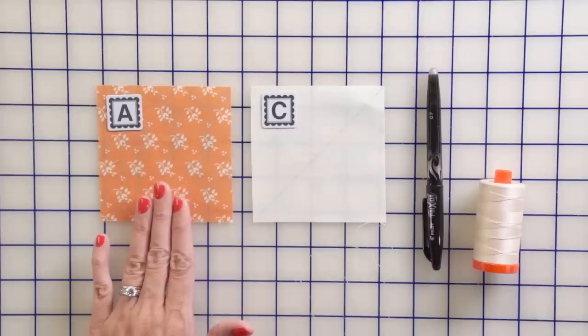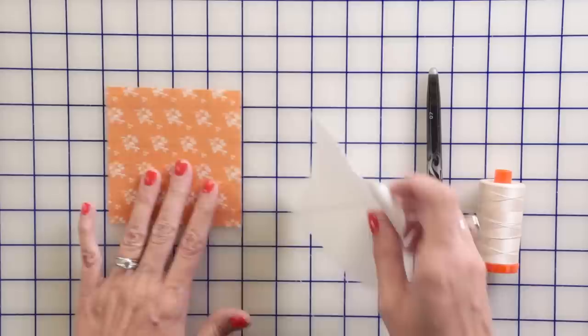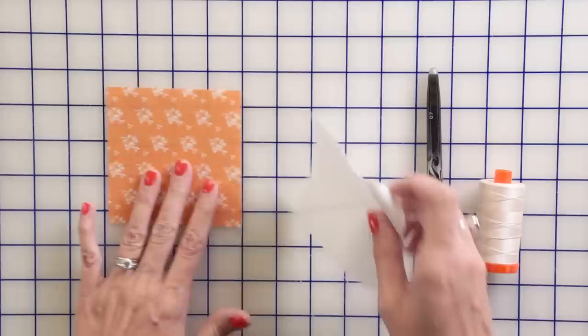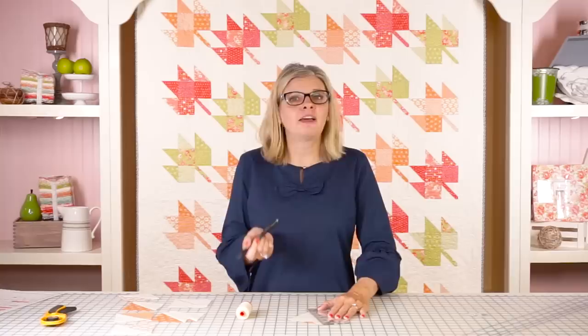Our first step in the maple leaf is to make half square triangle units. You're going to take a fabric A and a fabric C square. If you download the free pattern at Fat Quarter Shop, you'll see the size. Put those right sides together, pin in place, and then use a friction pin and draw a line from corner to corner. I love the friction pin. It will disappear with heat later.